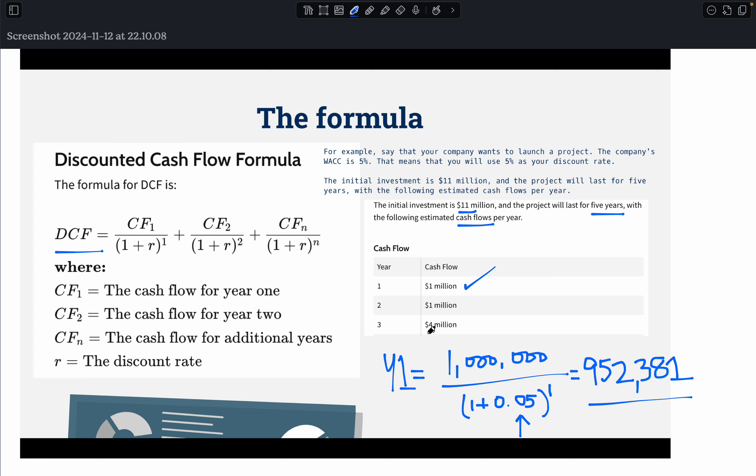Year three, you change the value and it becomes 4 million divided by one plus 0.05 to the power of three. And the answer should be something, something and so on. So this was your discounted cash flow method of investment appraisal.